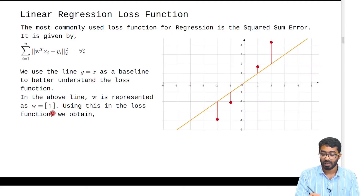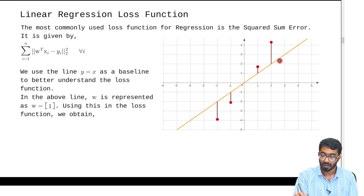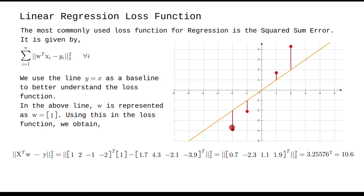The plotting is given here and as you can see, this is the w vector and these are the residuals. Calculating the loss function using this formula, we finally get the loss to be 10.6.